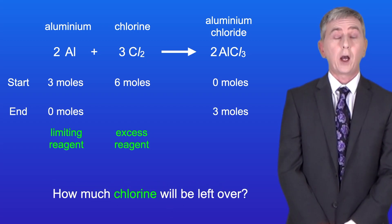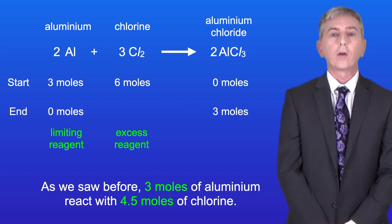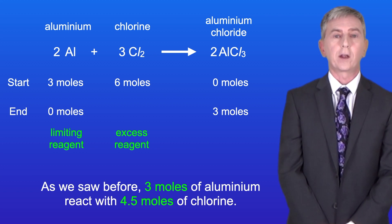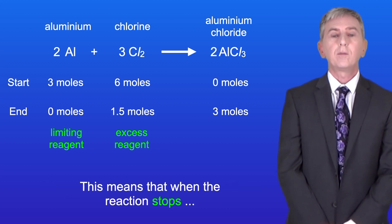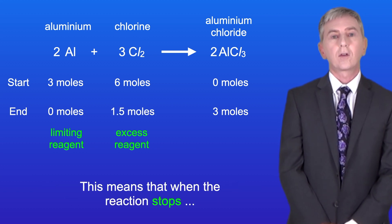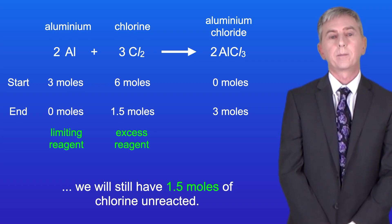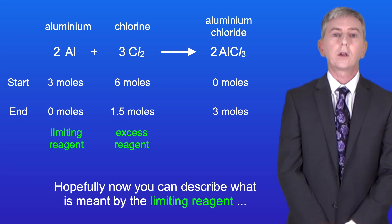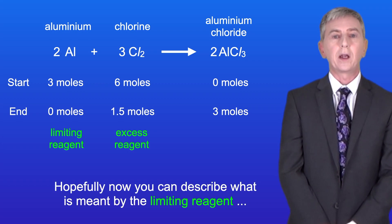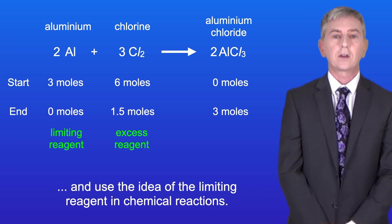So how much chlorine will be left over? As we saw before, 3 moles of aluminium react with 4.5 moles of chlorine. This means that when the reaction stops we will still have 1.5 moles of chlorine unreacted. Hopefully now you can describe what's meant by the limiting reagent and use the idea of the limiting reagent in chemical reactions.